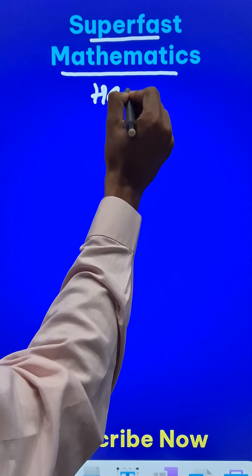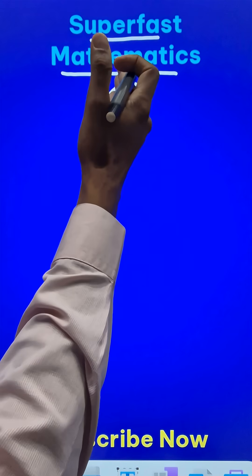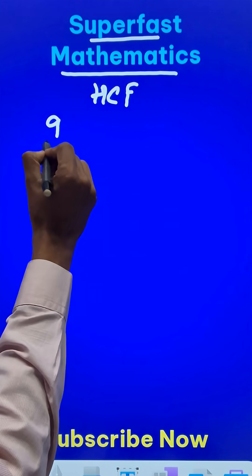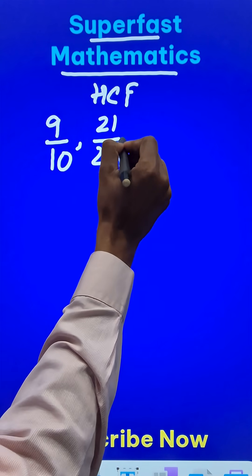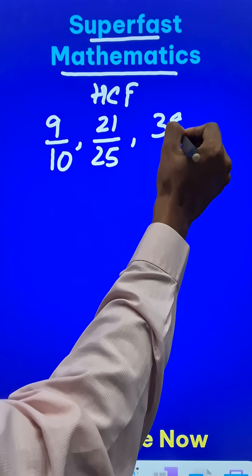The highest common factor of not whole numbers, but fractions. The fractions given are 9 upon 10, 21 upon 25, and the third one is 39 upon 40.